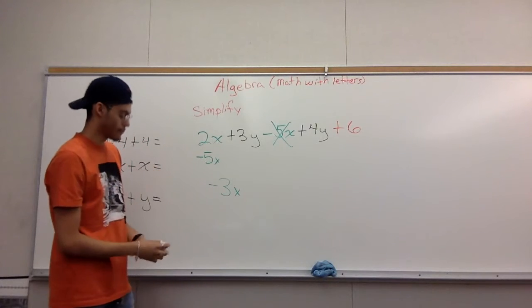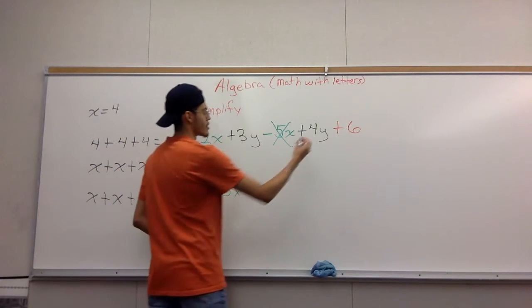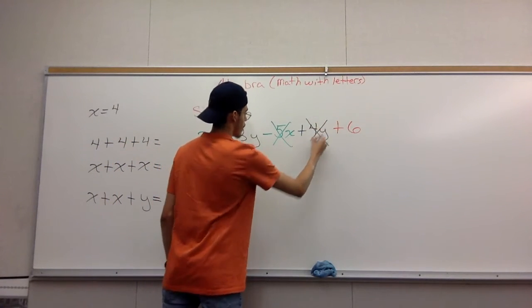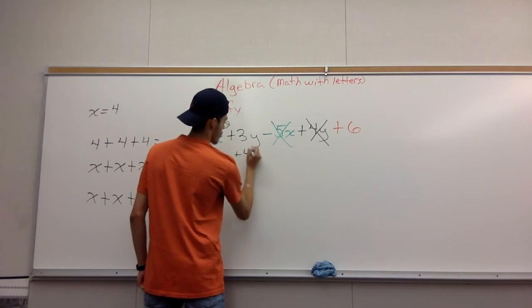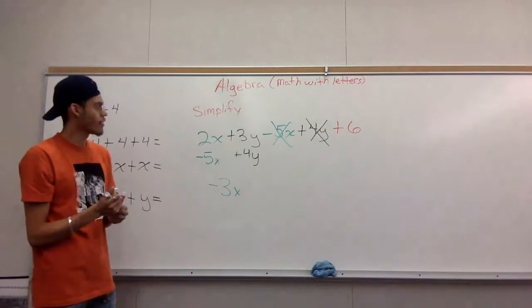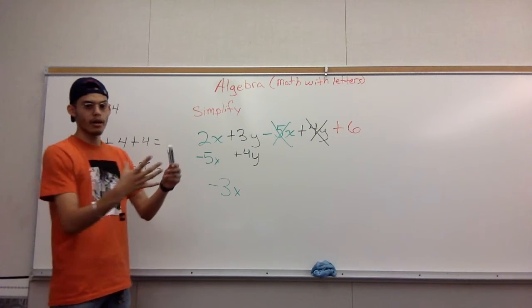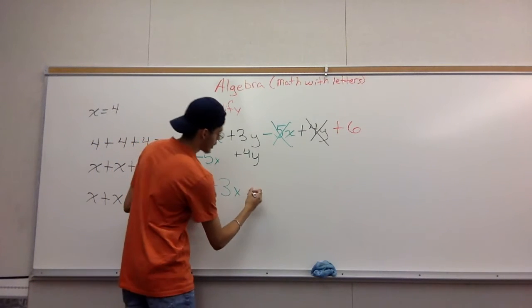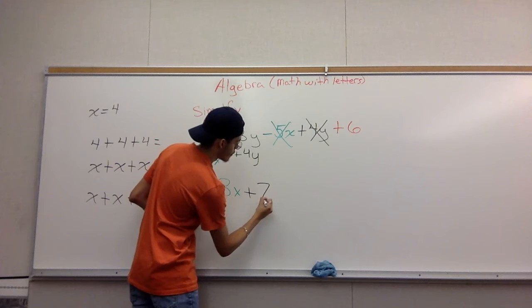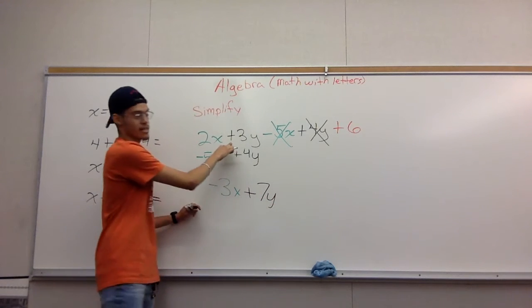Now with the y's, you do the same thing that we did before. You move the 4y, so you have 3y and then you have 4y. You're basically just adding them together, putting them together, and you're left with 7y, positive of course, because it's a positive and a positive.